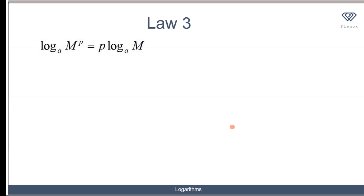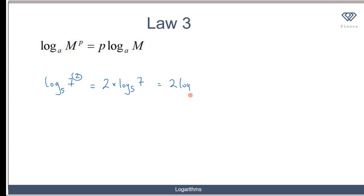The third law is the power law. It says the logarithm of m to the power p, to base a, is the same as bringing the power to the front: p times log m to base a. For instance, log 7 squared to base 5 is the same as writing 2 times log 7 to base 5. Similarly, log 8 to the power 9 to base 3 is the same as writing 9 times log 8 to base 3.